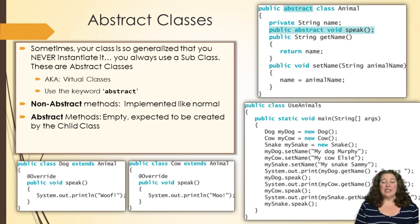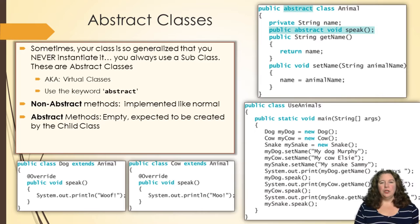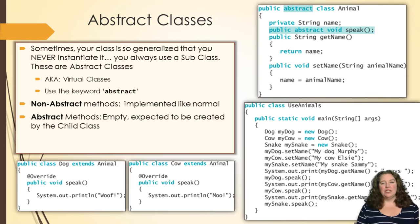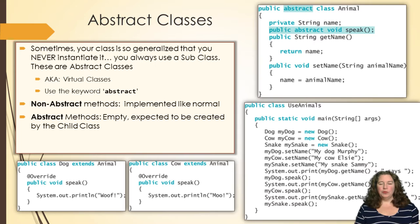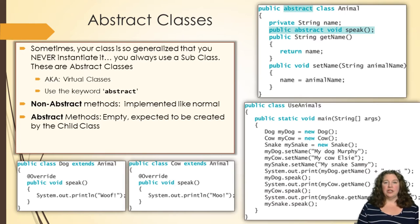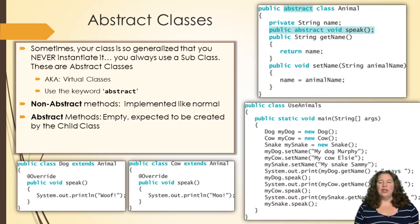Okay, abstract classes. Abstract classes are what you would use when your class is so generalized that you never actually use it alone. In the example we're going to give you today, we're going to talk about an animal. Generally when you refer to an animal, you don't refer to a generic animal — you refer to a specific type: a dog, a cat, a bird, a snake, a fish. These are specific types of animals, but we rarely talk about an animal as just the concept of an animal.